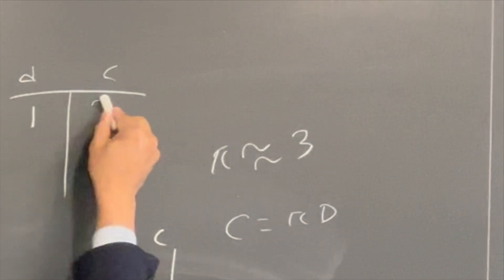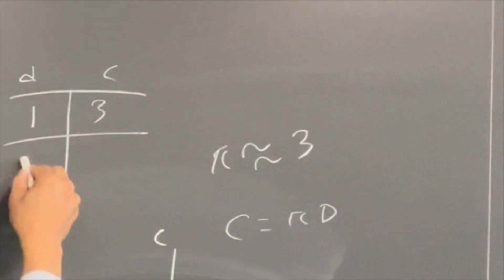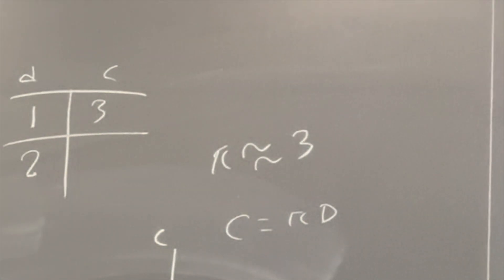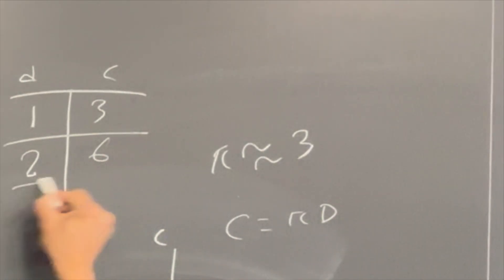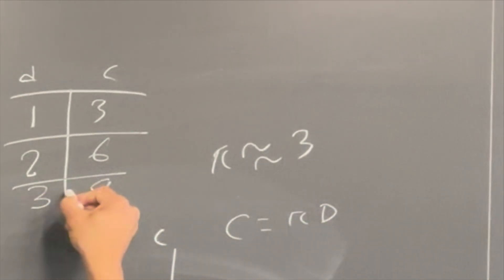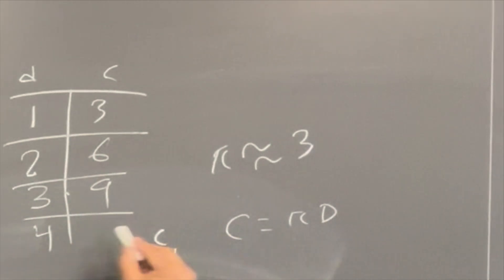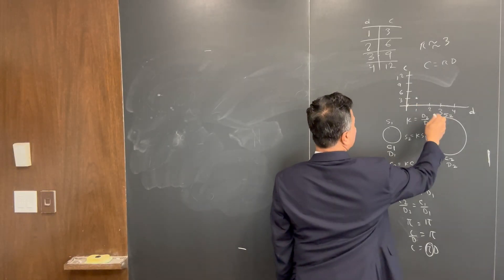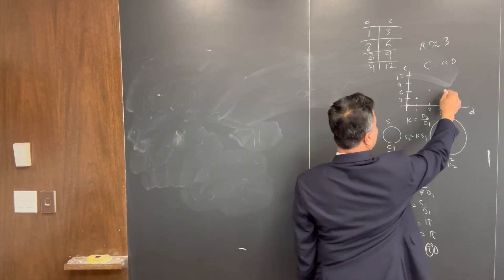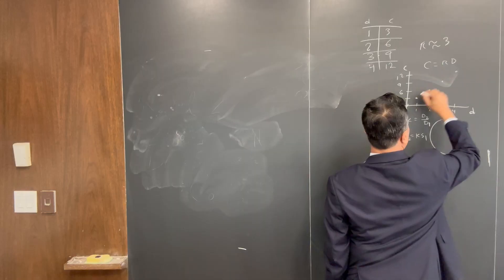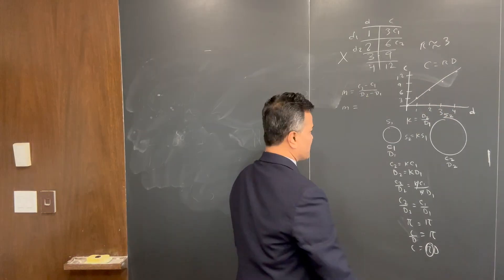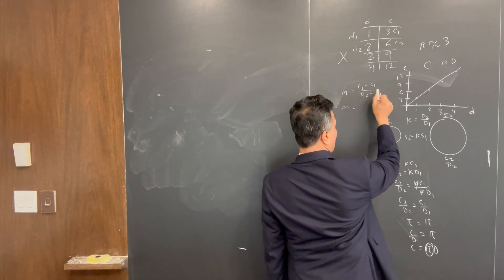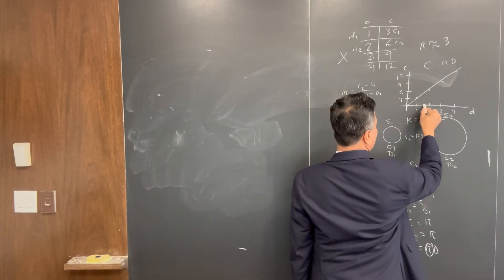If diameter is 1 then circumference is 3; if diameter is 2 then 6; if diameter is 3 then 9; if diameter is 4 then 12 — so 3 times 4 equals 12. Your points come from the best-fit line.